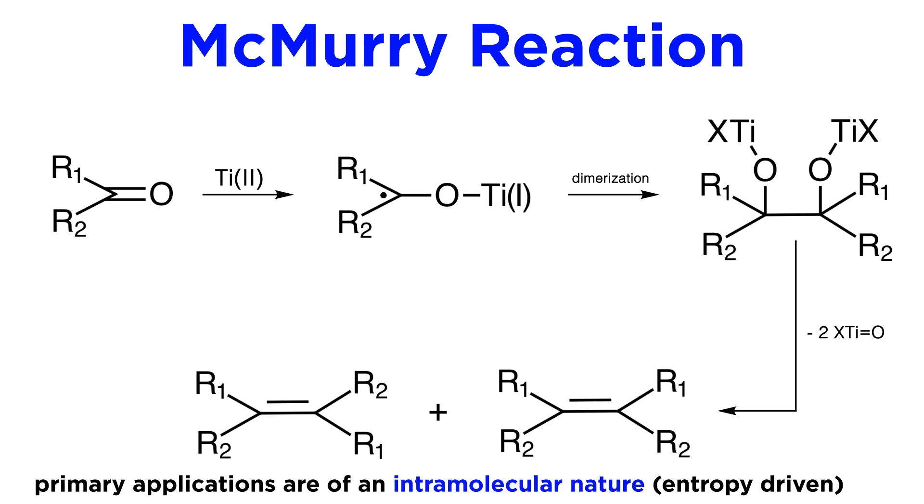Due to these difficulties, the McMurry reaction has found application primarily in intramolecular reactions, where it has been used in complex natural product synthesis. In such a situation, it is the intramolecular nature, and therefore the more favorable entropy of activation, that leads preferentially to the desired heterocoupling product, with a double-bond geometry corresponding to the less strained isomer.